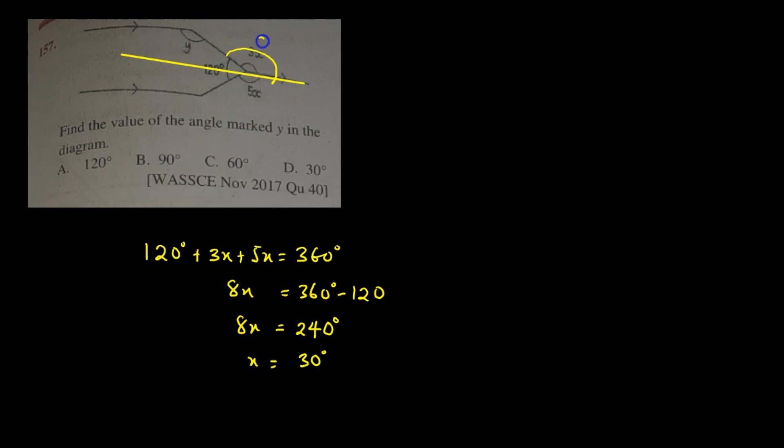So therefore knowing the value of x to be 30, then the total angle here will be giving us 3 times 30 and that is equal to 90 degrees. Now the angle as you can see here is 120.